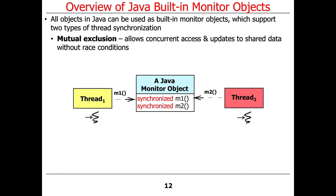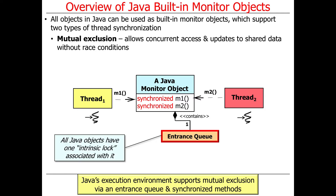The way that's supported under the hood is that all Java objects have one and only one so-called intrinsic lock — one intrinsic lock per object, associated with that object. That plays the role of what's called an entrance queue. Java's execution environment, such as the virtual machine, supports mutual exclusion internally via this entrance queue, which is part of the intrinsic lock, and synchronized methods, which are used to coordinate how that entrance queue is used.